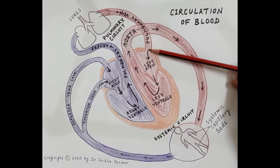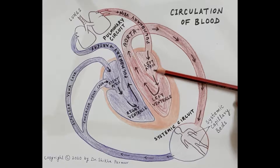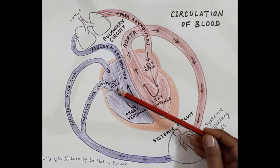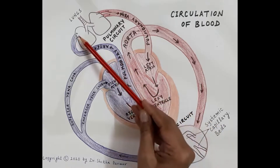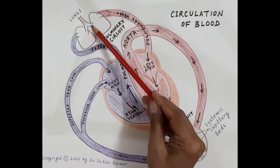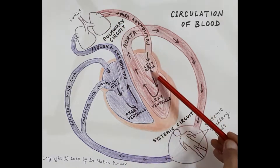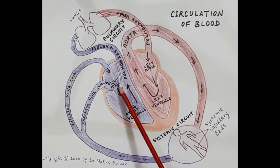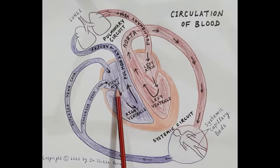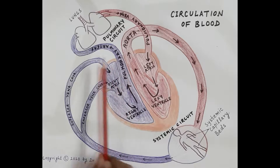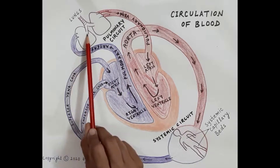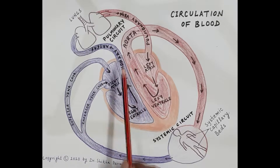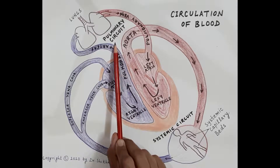The pulmonary vein carries this oxygenated blood to the left atria. So from the heart, from the right atria, the blood goes to the lungs for oxygenation, and from the lungs the blood comes back to the heart. This circulation of deoxygenated blood from the right atria to the lungs, and from the lungs the circulation of oxygenated blood to the left atria, is termed as the pulmonary circulation.